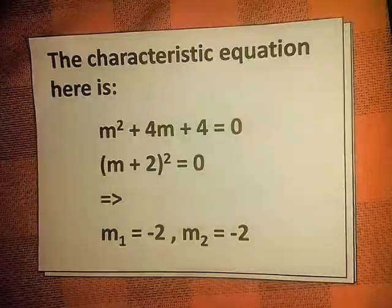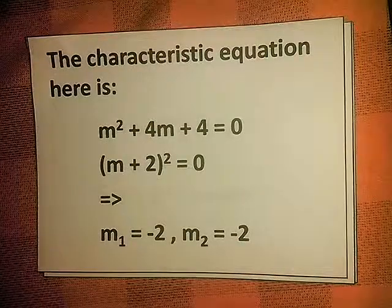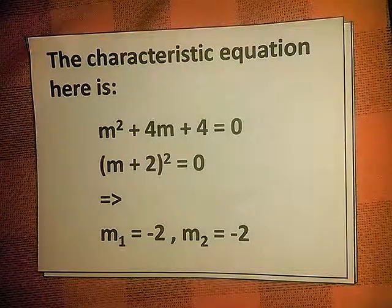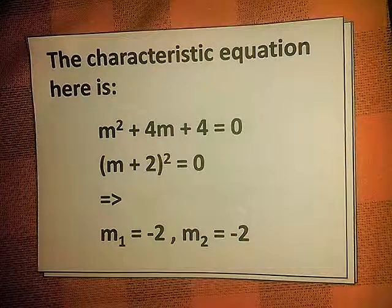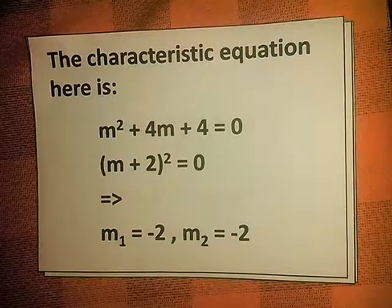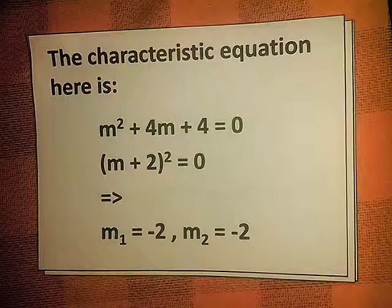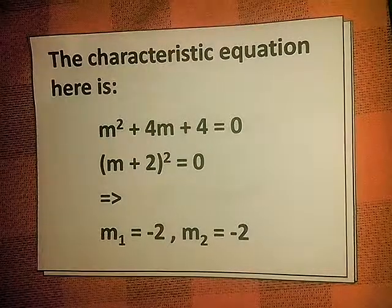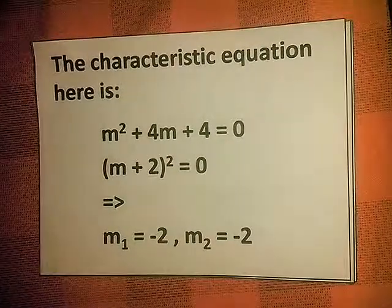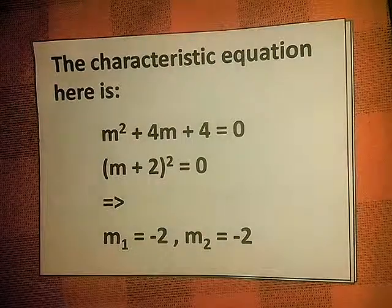The characteristic equation is m² + 4m + 4 = 0, which factors as (m + 2)² = 0. We get the value of m which is negative 2.